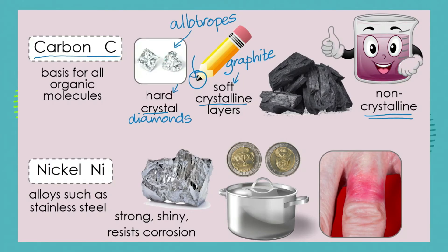Graphite slides off the tip of our pencil in layers that get left behind on the paper. There is also a non-crystalline form of carbon — charcoal or coal — which is certainly not shiny, not very hard, and more powdery when crushed. Carbon is extremely important because it is the element that is the basis for all organic molecules — all carbohydrates, proteins, and fats — everything making up a living organism like our own body.